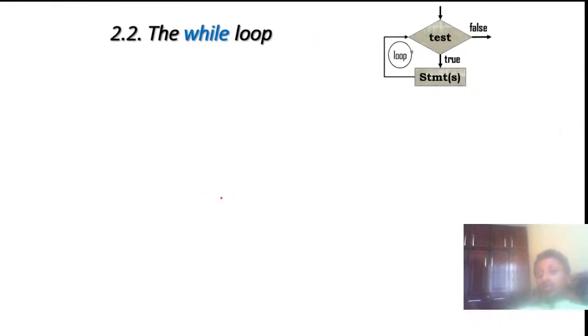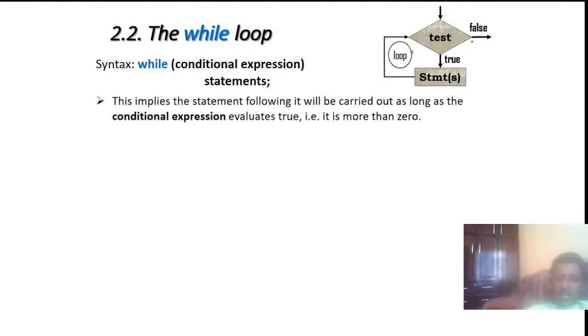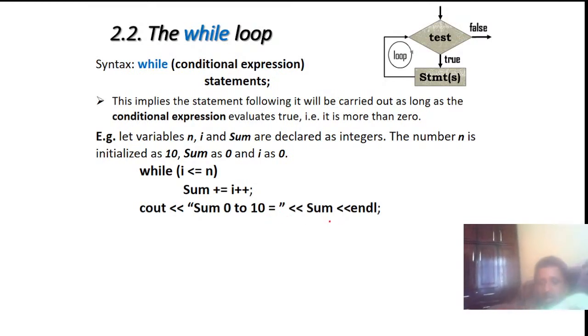The second one is the while loop statement. As you see in the diagram, the condition is tested first. If true, the statement is executed, then the condition is tested again. If false, execution exits the loop. Syntax: while(condition expression) statement — it implies the statement following it will be carried out as long as the condition expression evaluates true, meaning it is more than 0. For example: while(i <= n), sum = sum + i, then i++ (post-increment). Then cout the sum from 0 to 10.